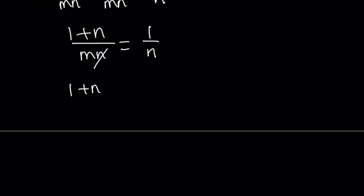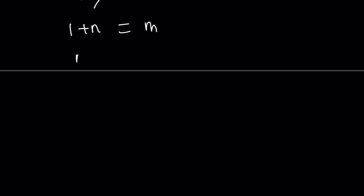1 plus n equals m. And let's put m and n on the same sides. So m minus n equals 1. Great. What is that supposed to mean? Well, if the difference between two prime numbers is 1, which is a rare case by the way,